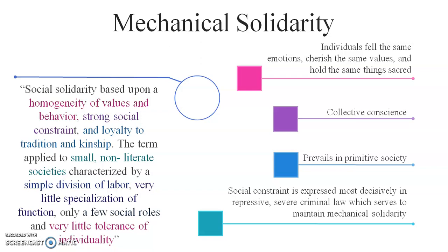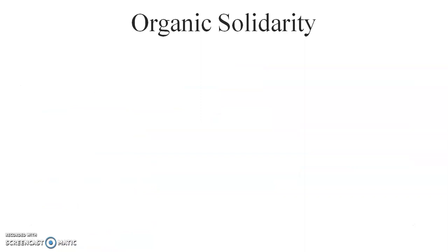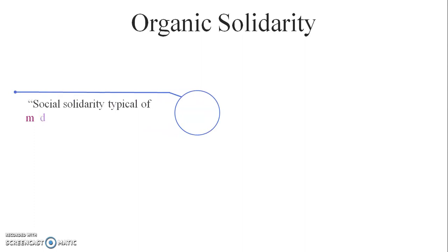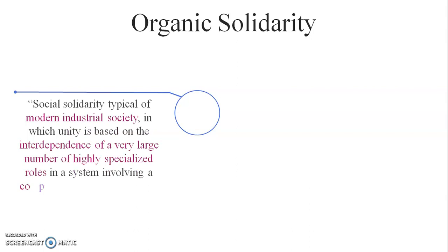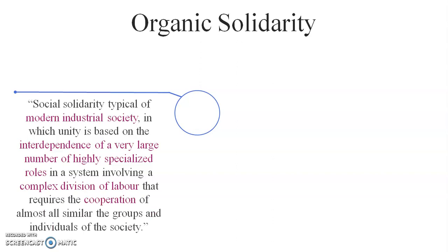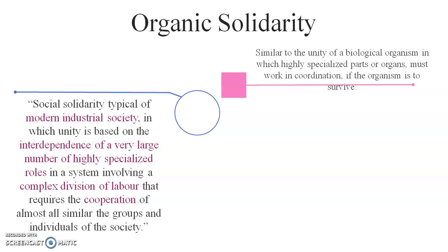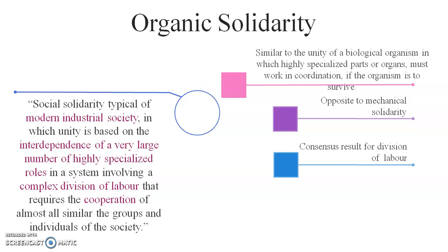This type of solidarity prevails in primitive society, and social constraint is expressed through repressive, severe criminal law, which serves to maintain mechanical solidarity. Organic solidarity, by contrast, is typical of modern industrial society, where unity is based on the interdependence of a large number of highly specialized roles in a complex division of labor requiring cooperation across groups and individuals. It is similar to the unity of a biological organism, where specialized organs must work in coordination for survival. It is based on civil and administrative law.